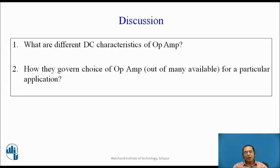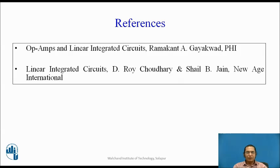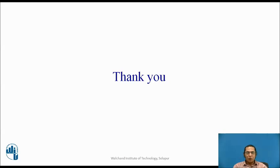With that we come to the end of today's session. I leave you with two questions: first, explain the different DC characteristics of op-amp; second, how they govern the choice of op-amp out of the many available for a particular application. References are two books: one by Ramakant Gayakwad, and the second by Roy Choudhury and Shail Jain. Thank you very much, dear students, for patient listening.